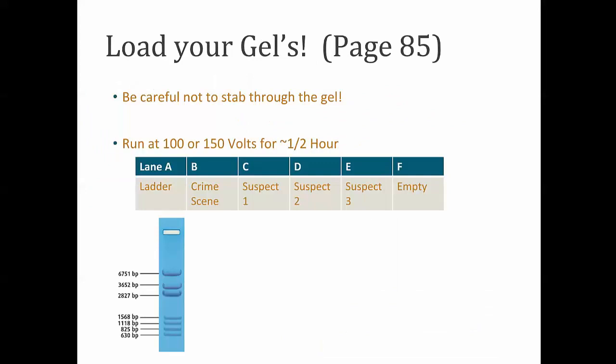So what we're going to do is we're going to have several lanes. We're going to have a ladder. And a ladder is a sample you'll add to your gel that contains known pieces of DNA. So pieces of DNA of known lengths. So you'll have them to compare as a standard to the rest of your samples.